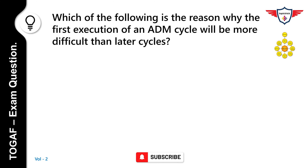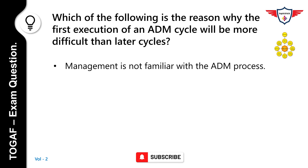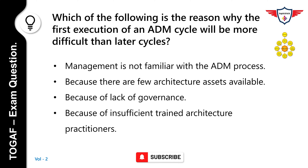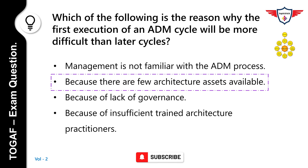Which of the following is the reason why the first execution of an ADM cycle will be more difficult than later cycles? Options: Management is not familiar with the ADM process; because there are few architecture assets available; because of lack of governance; because of insufficient trained architecture practitioners. The correct answer is: because there are few architecture assets available. The first execution of the ADM will often be the hardest since the architecture assets available for reuse will be relatively scarce. However, there will be architecture assets available from external sources such as TOGAF as well as the IT industry at large that could be leveraged.